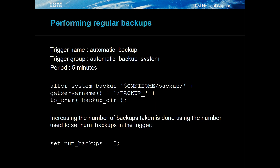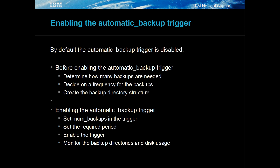It is recommended that backups are performed regularly. An example trigger is provided for this purpose: automatic_backup. By default, only two sets of tab files are kept. Before enabling the automatic_backup trigger, decide on how many backups are required and the frequency of the backups, then create the backup directory structure. To enable the trigger, set the num_backups value and the trigger's period using the administration tool.